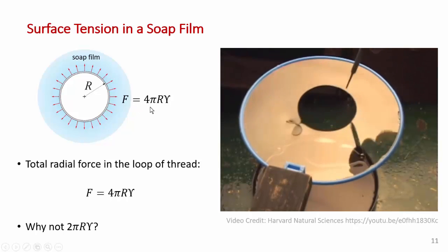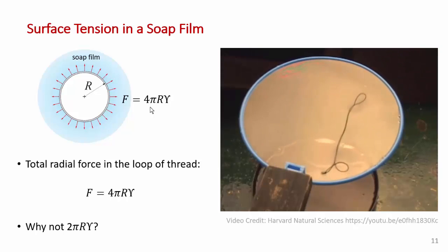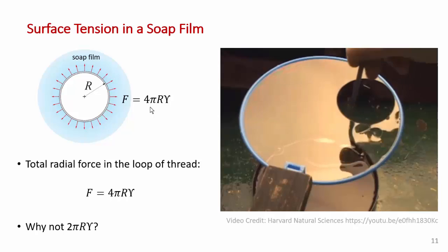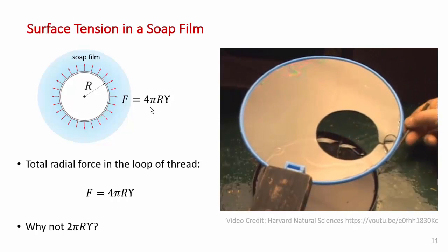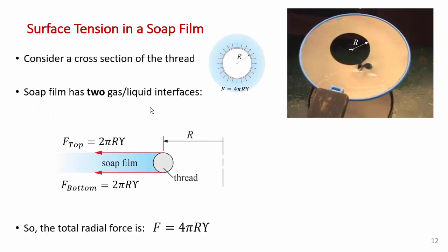Now, the total radial surface tension force on that thread is going to be 4πr times the surface tension. So 2 times the circumference times the surface tension. Now, let me ask you this. Why not 2πr times the surface tension? Maybe you could pause the video for a moment and think about this. The answer is that there are two interfaces to consider. If you consider the cross section of the thread shown here, here we have the cross section of the thread and the soap film. A soap film has two gas-liquid interfaces. So we have 2πr times the surface tension on the top surface and 2πr times the surface tension on the bottom surface. So the total radial force on that loop of thread is 4πr times the surface tension.